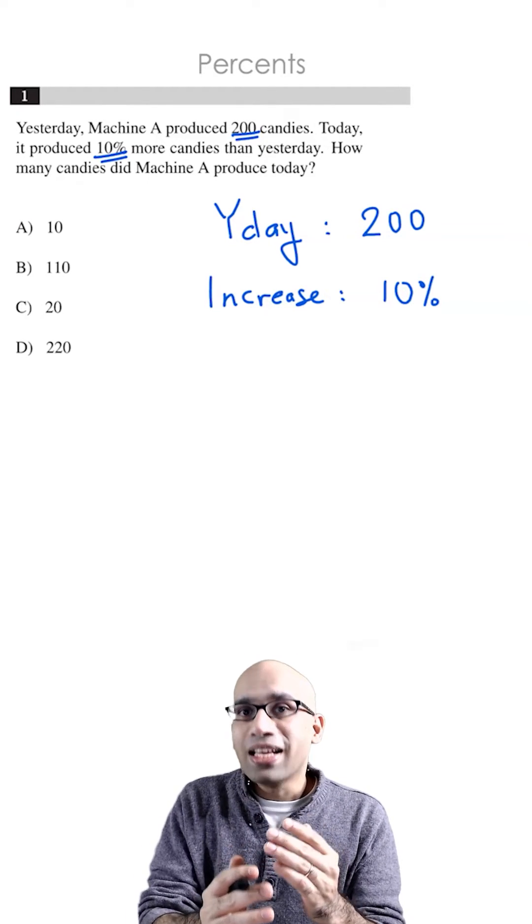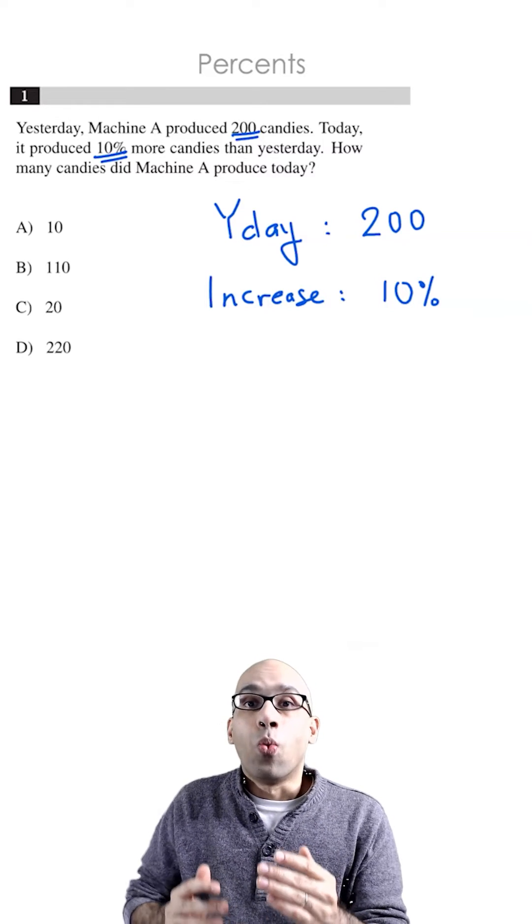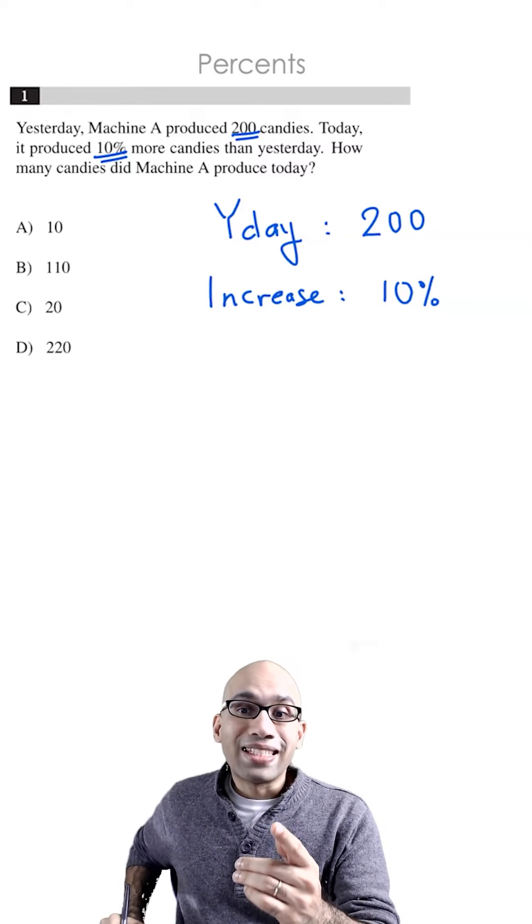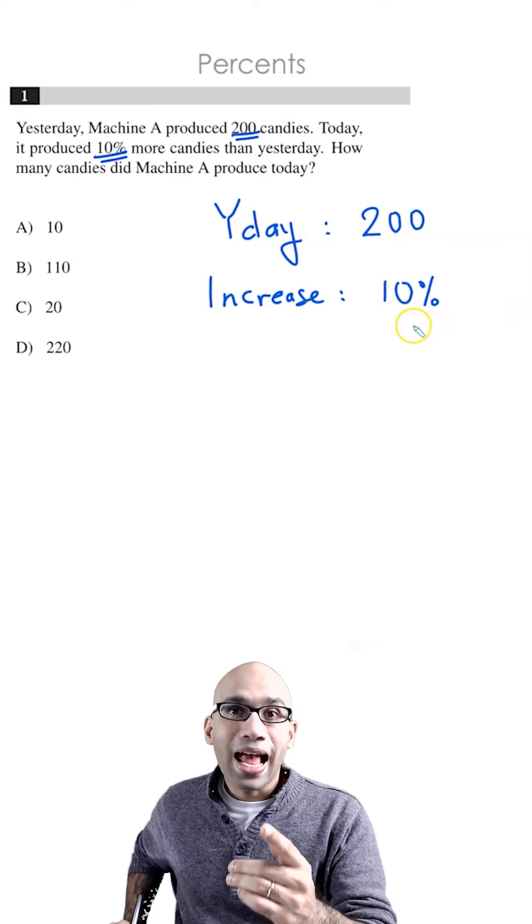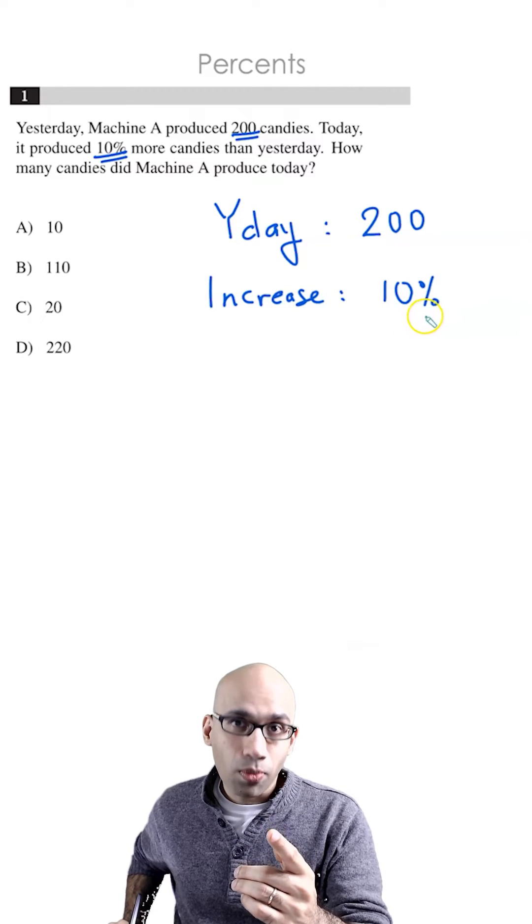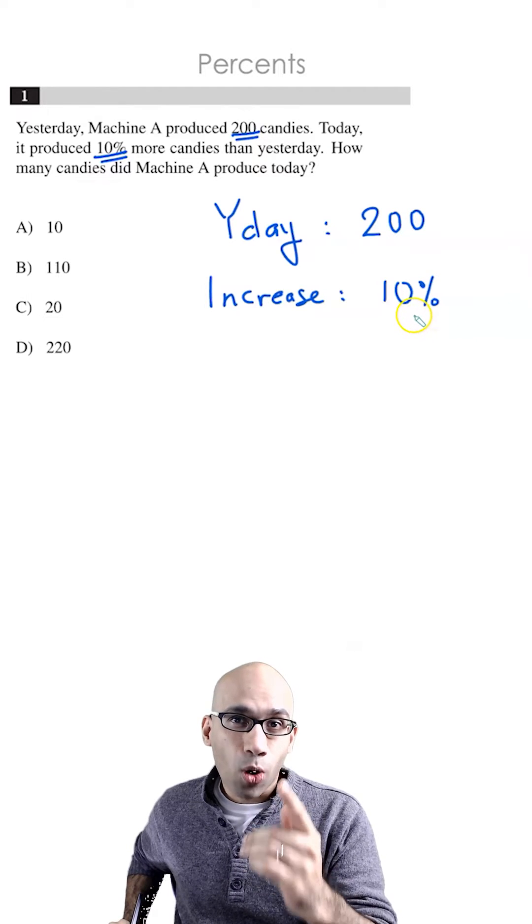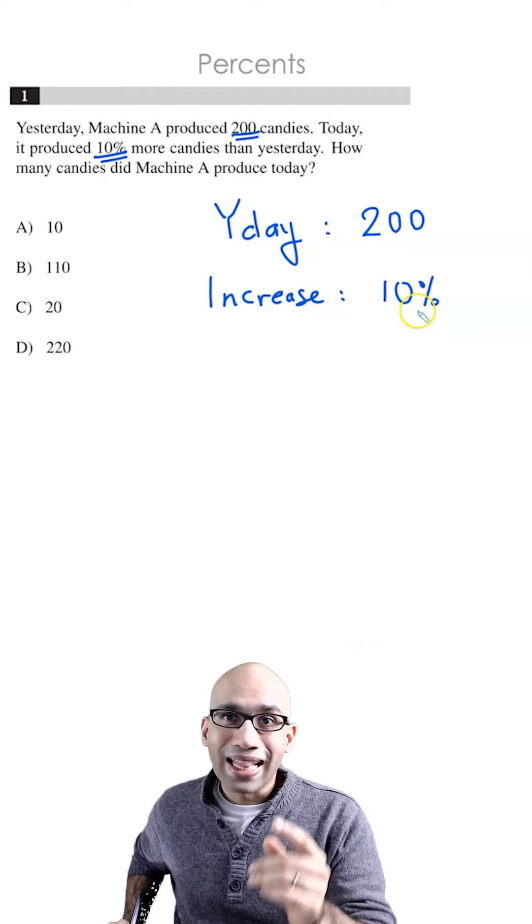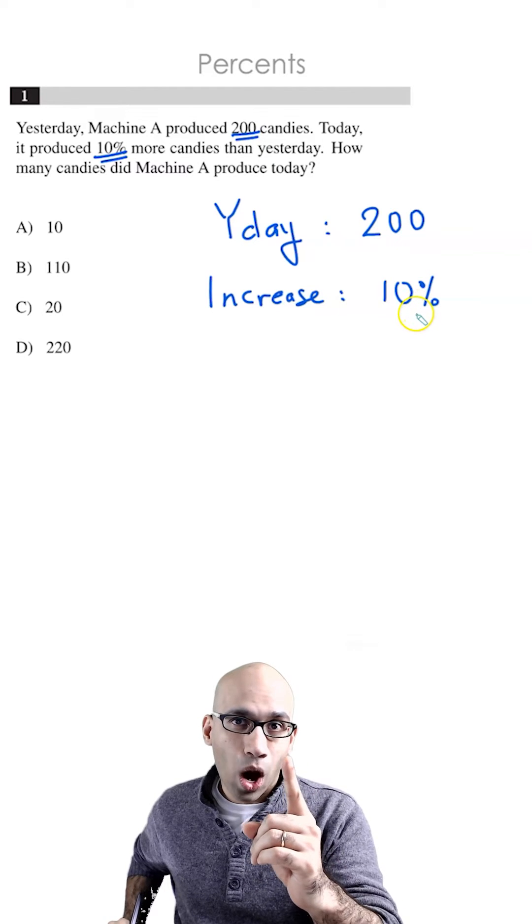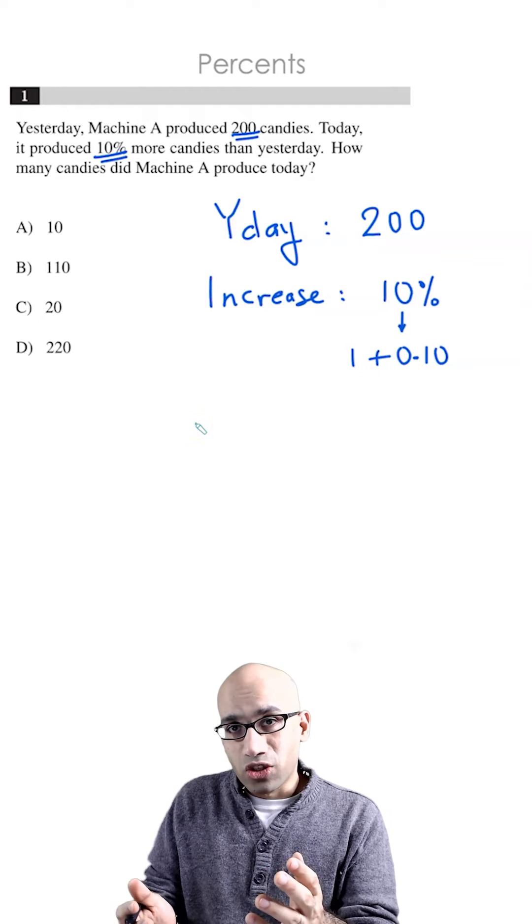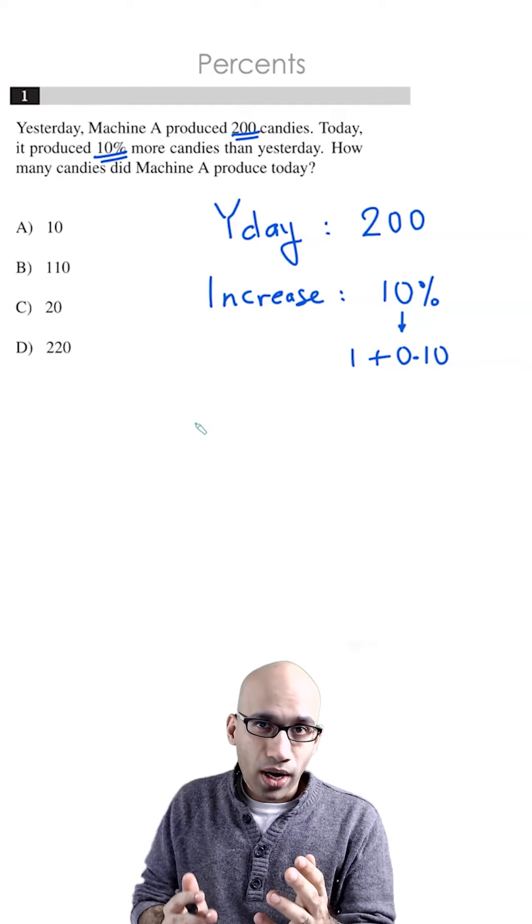There's a very simple hack to find the answer. What you're going to do first is take this 10% here and convert it to its decimal form, which is going to be 0.10, and then add it to the number 1. So 1 plus 0.10 is just 1.10.